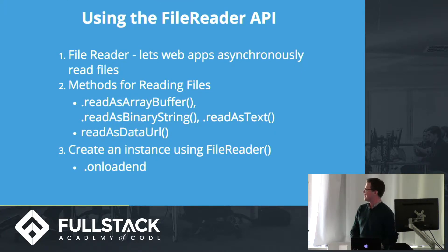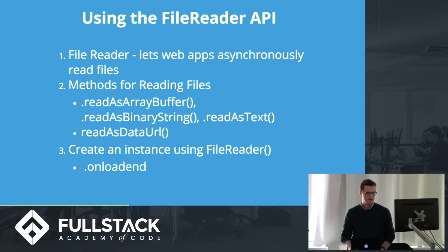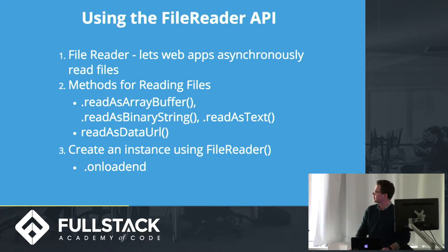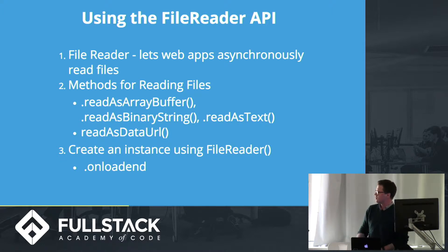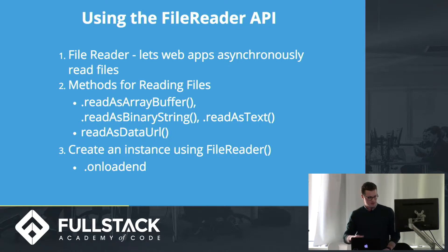One other thing before we get to the example — you've got to understand the FileReader API as well. The FileReader API lets web apps asynchronously read files, and it has a number of methods for reading them. The one we're going to talk about is readAsDataURL, which is what actually does the encoding to base64. You use the FileReader constructor to create an instance, have it read data as a URL, then listen for the onloadend event, and then you can make an Ajax request to your backend with your encoded string.